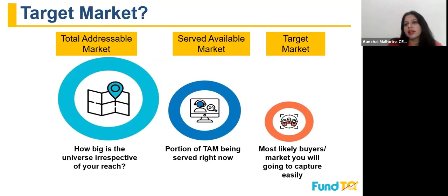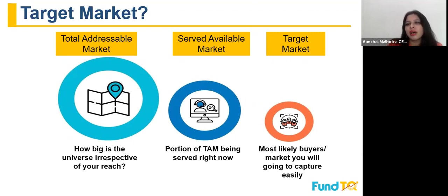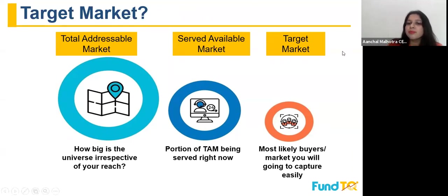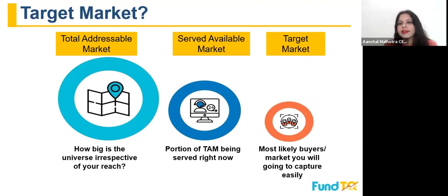How is total addressable market different from target market? The total addressable market means how big is the universe, irrespective of whether you're able to reach it or not. Then comes the served available market — that is the portion of the total addressable market being served right now. The target market is the most likely buyers, the market you will capture easily — they require it and you can sell to them upfront. This is the target market.